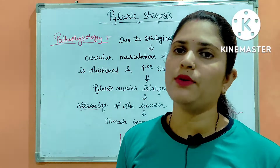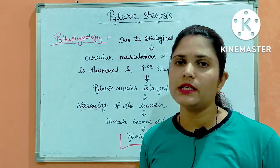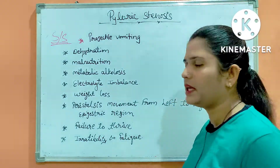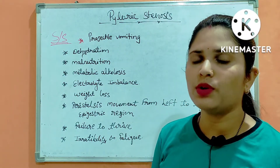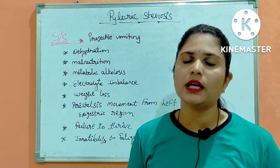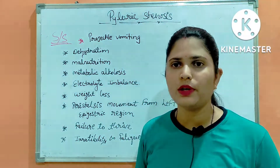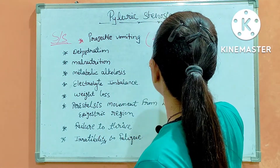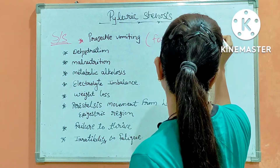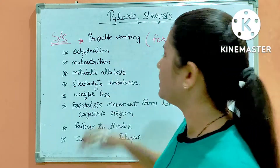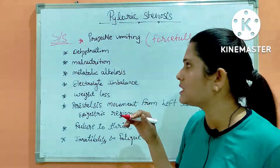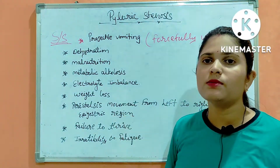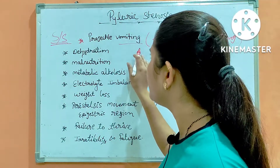Now let's look at signs and symptoms of pyloric stenosis in babies, children, and infants. The first symptom is projectile vomiting. When the baby takes food — milk, juice, or any diet — the stomach forces it back out. Food contents are returned forcefully. This projectile vomiting is a key symptom and a common competitive exam question associated with pyloric stenosis.